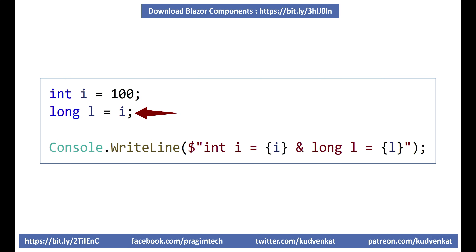This is because the int data type can be converted to a long data type without any data loss. Long data type has a much bigger range than int data type, so integer can be converted to long without any data loss. This is called implicit conversion and the compiler allows this.